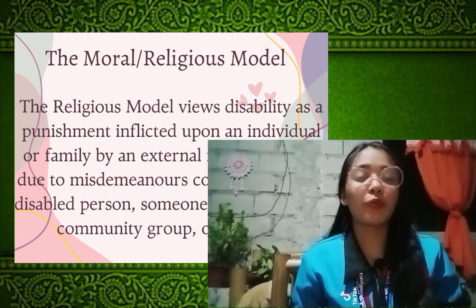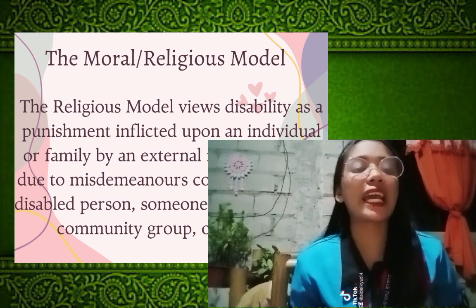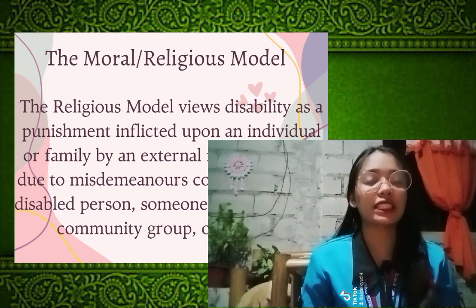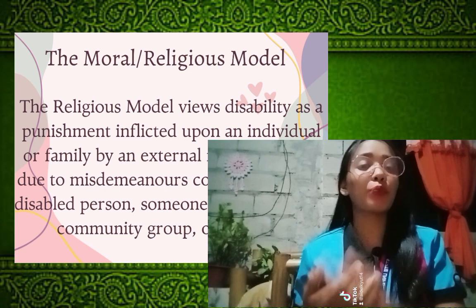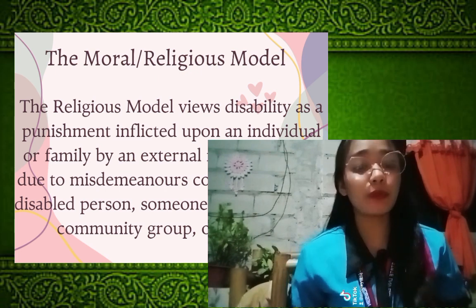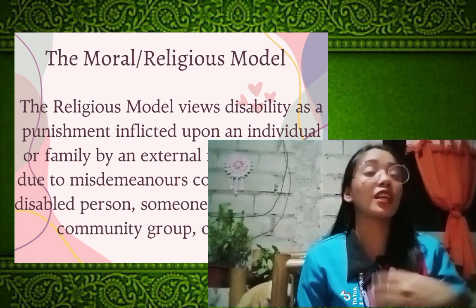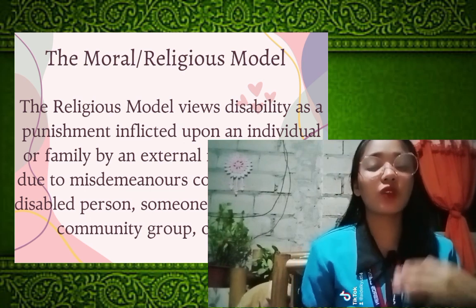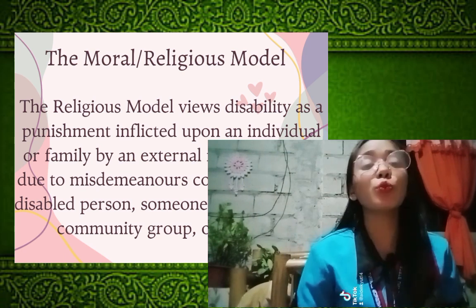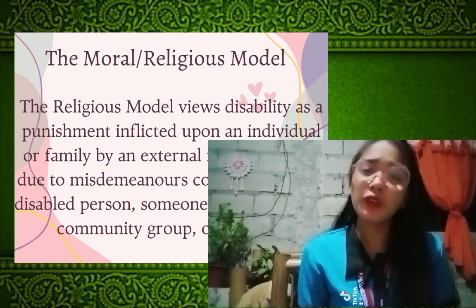The first model of disability is the moral or religious model. The moral model is the idea that people are ethically accountable for their own disabilities. This concept portrays disability as a stigma and implies that people with disabilities or their own families are responsible for some unrecognized actions, which resulted in handicap. The moral model states that people with disabilities are embarrassing and pitiful, and that we should feel sorry for them.